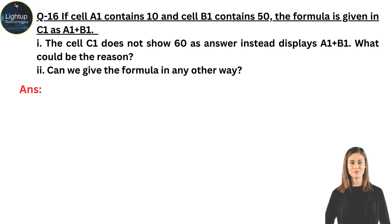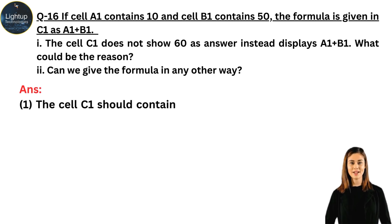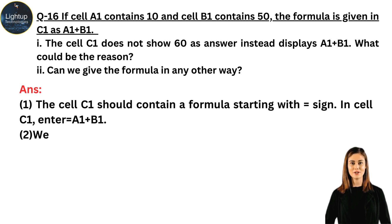If cell A1 contains 10 and cell B1 contains 50, the formula is given in C1 as A1 plus B1. The cell C1 does not show 60 as answer instead displays A1 plus B1. What could be the reason? Can we give the formula in any other way?